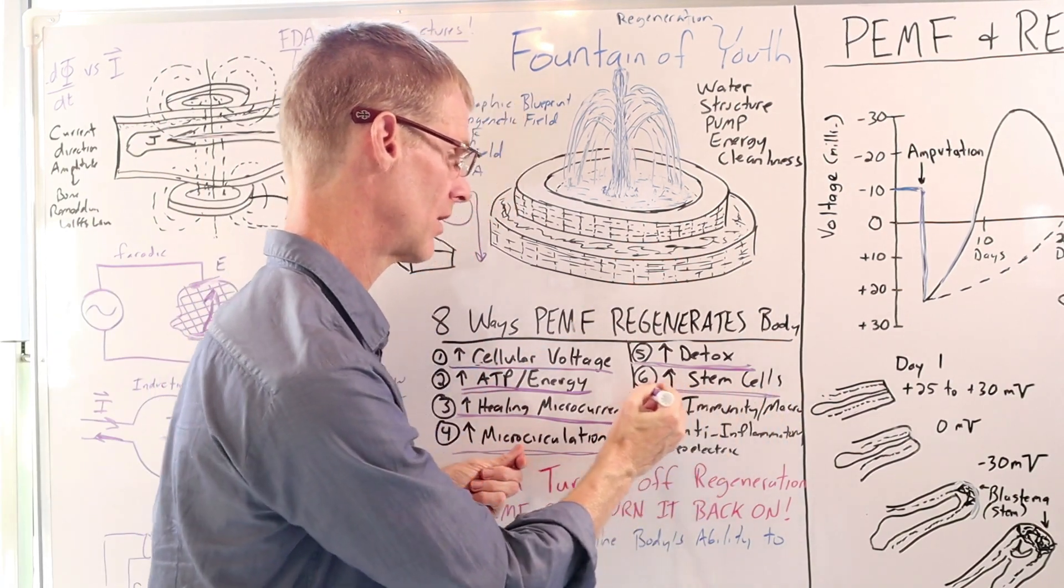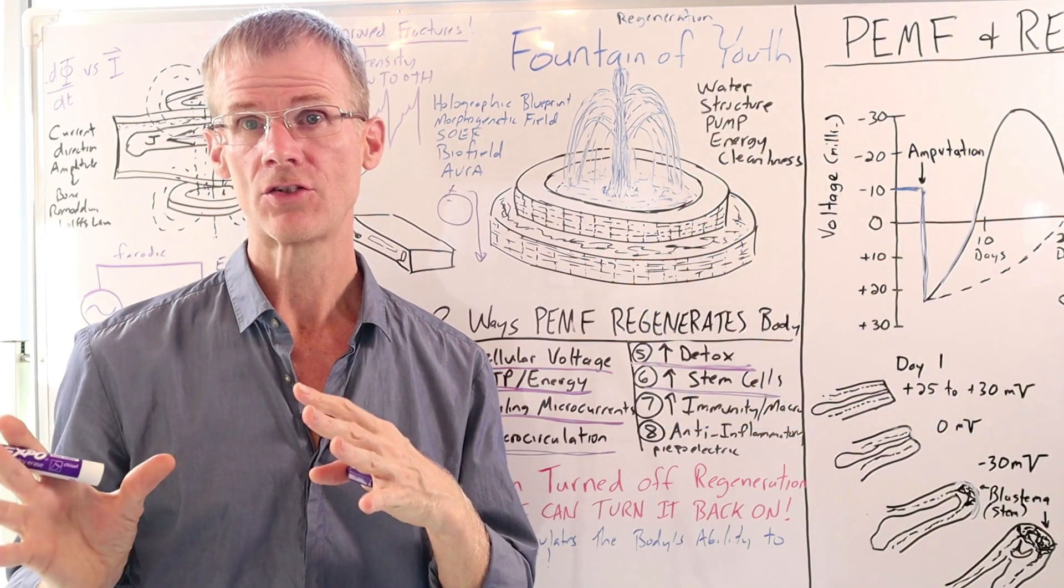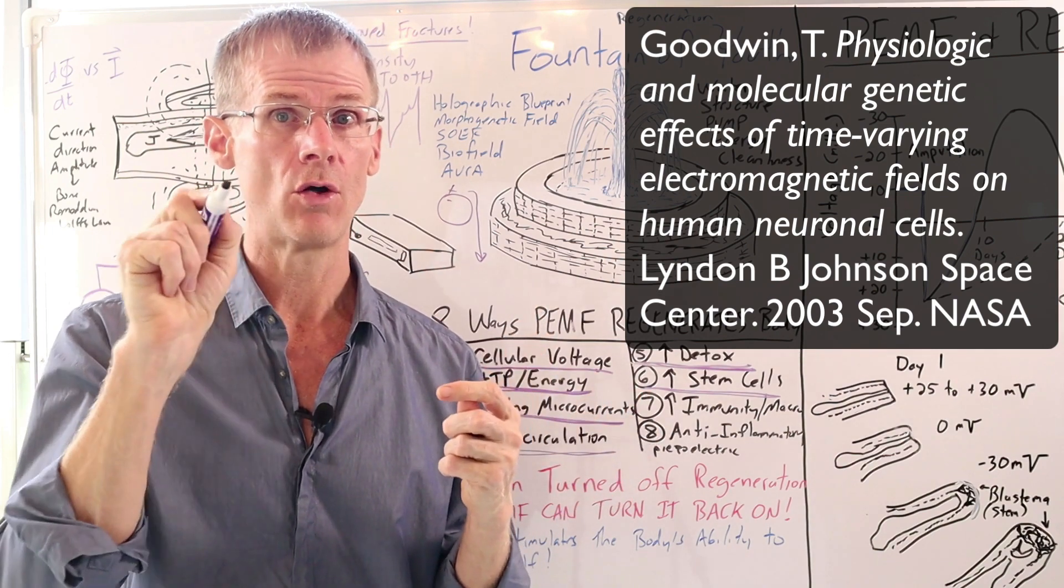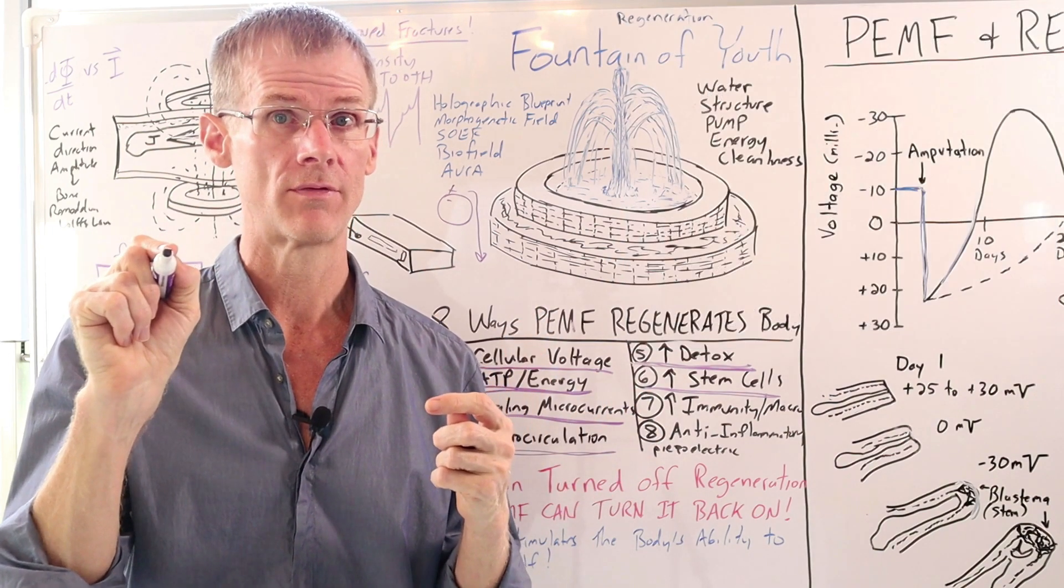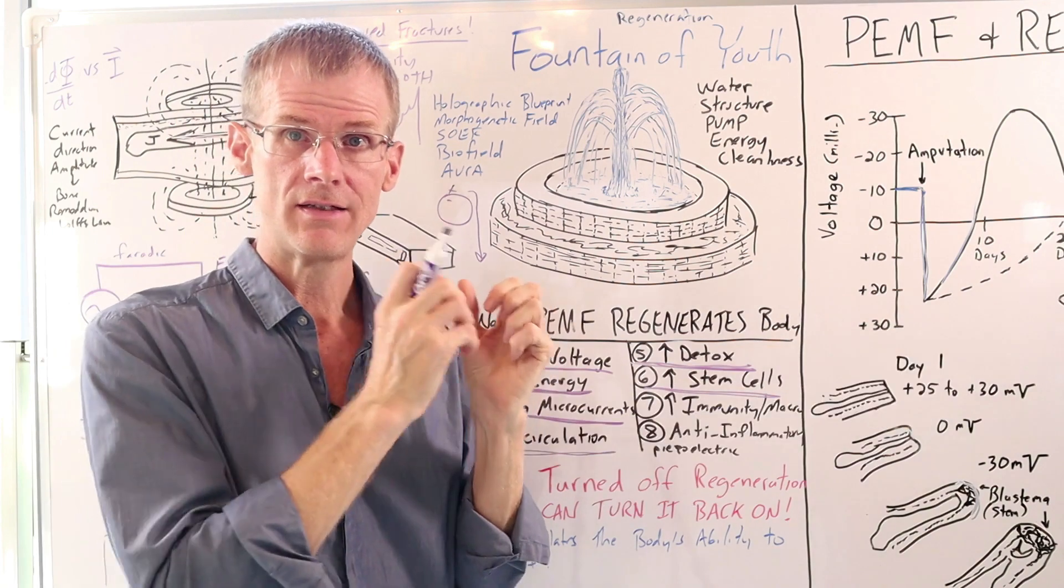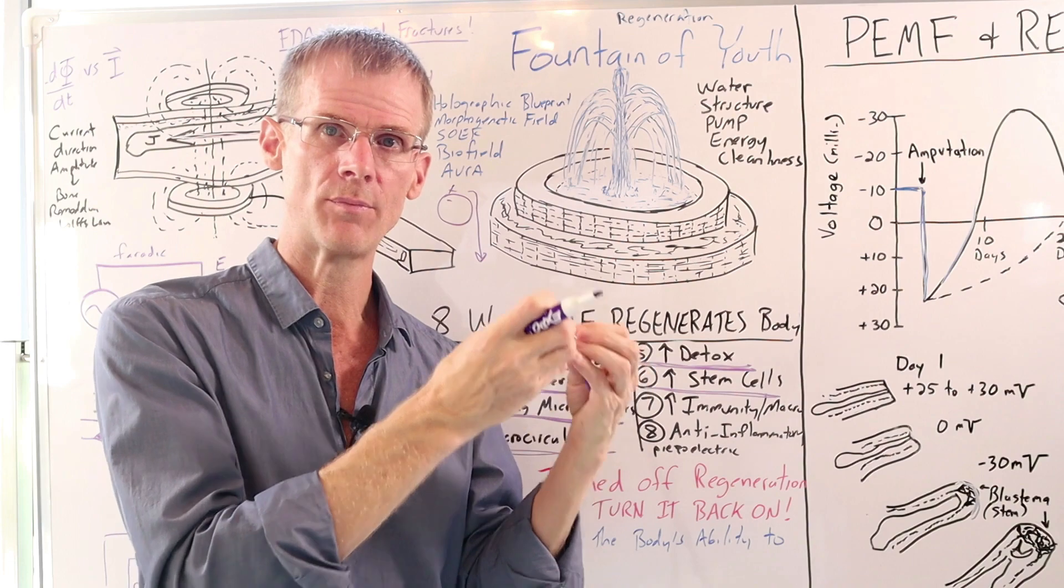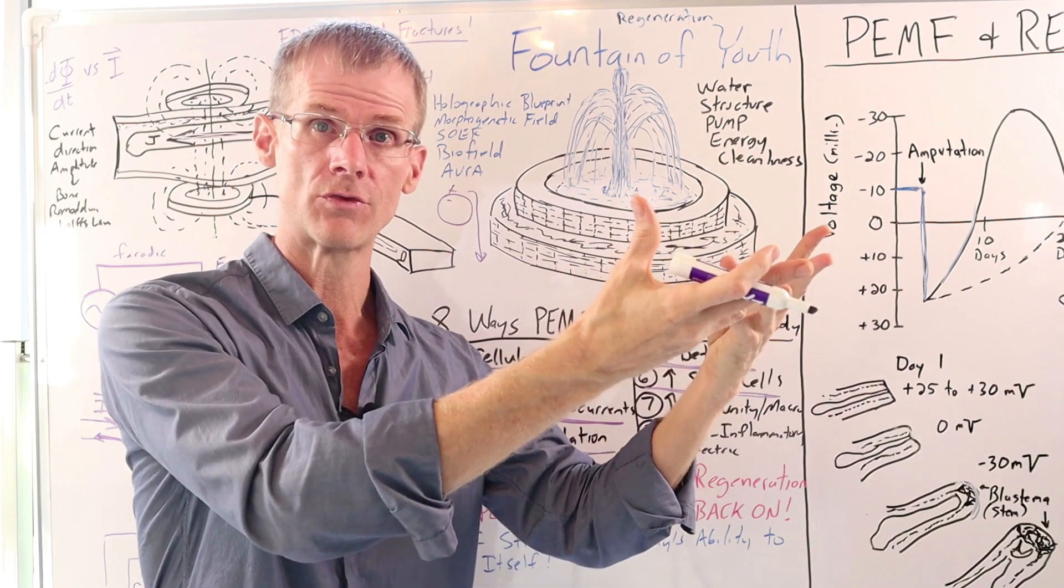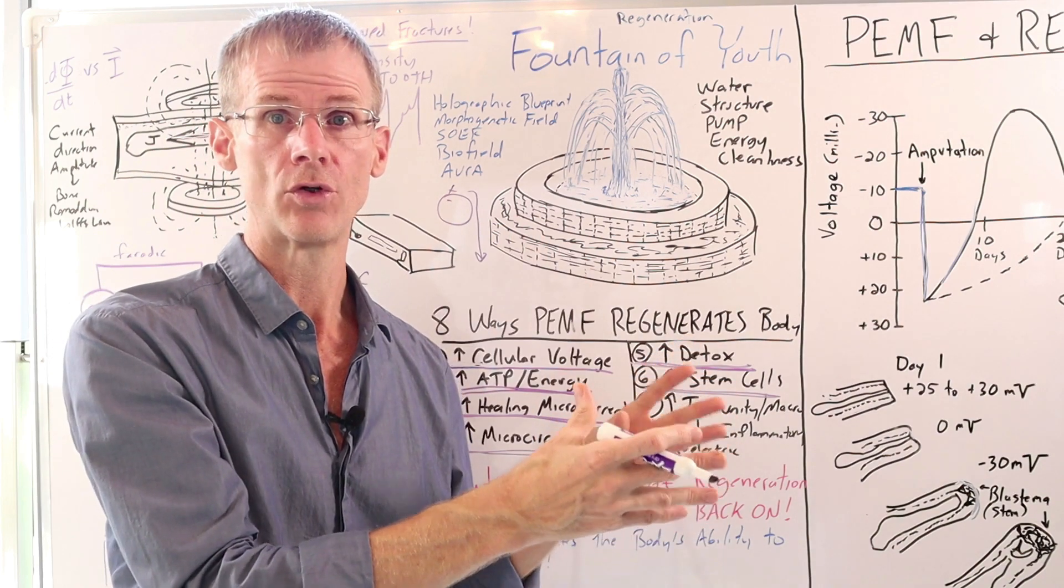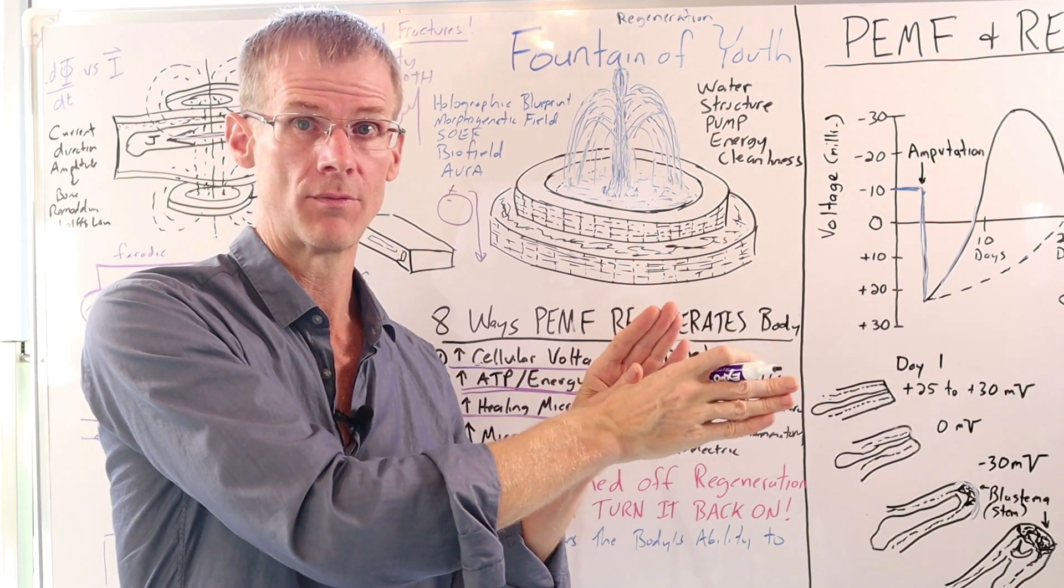The next thing PEMF does is, as I've talked about before, is it increases stem cells. Again, the one study done by Dr. Goodwin with NASA showed that PEMF therapy increased neural stem cell production up to 400% using a low intensity, low frequency square wave. Again, more is not better. But again, through this added energy, as we saw with the salamander, that de-differentiation of cells into totipotent stem cells, it's those stem cells that can then be programmed to become the new tissue for regeneration. And PEMF does both. It helps with creating the stem cells, helping them to divide and proliferate, and it helps them to differentiate into the tissue that they need to become for regeneration.